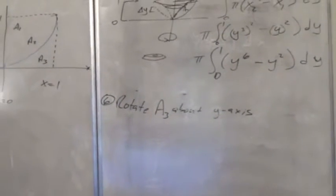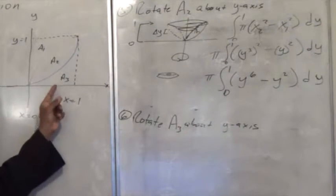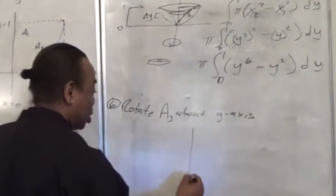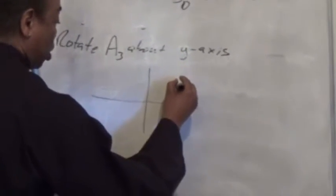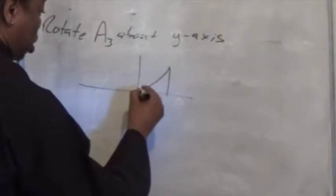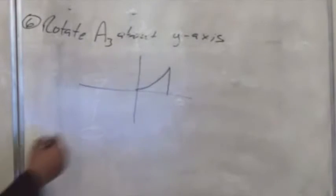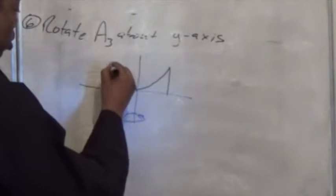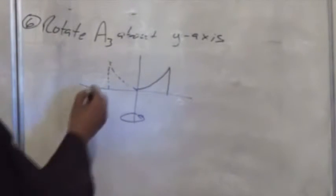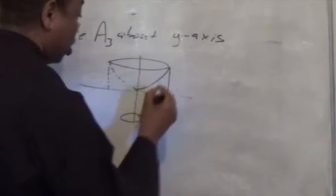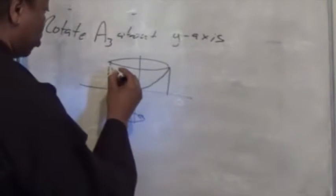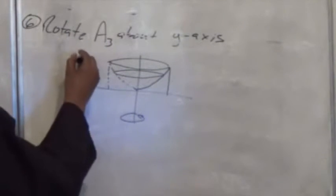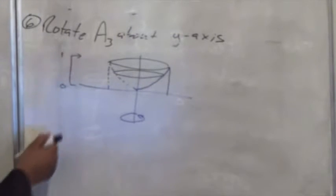Number 6. We want to rotate A3 — area A3 — about the y-axis. Let's show you what that will look like. That's A3, and let's rotate this about the y-axis. There's the image, then the illusion of rotation. And we'll be going from 0 to 1 to cover the whole figure.